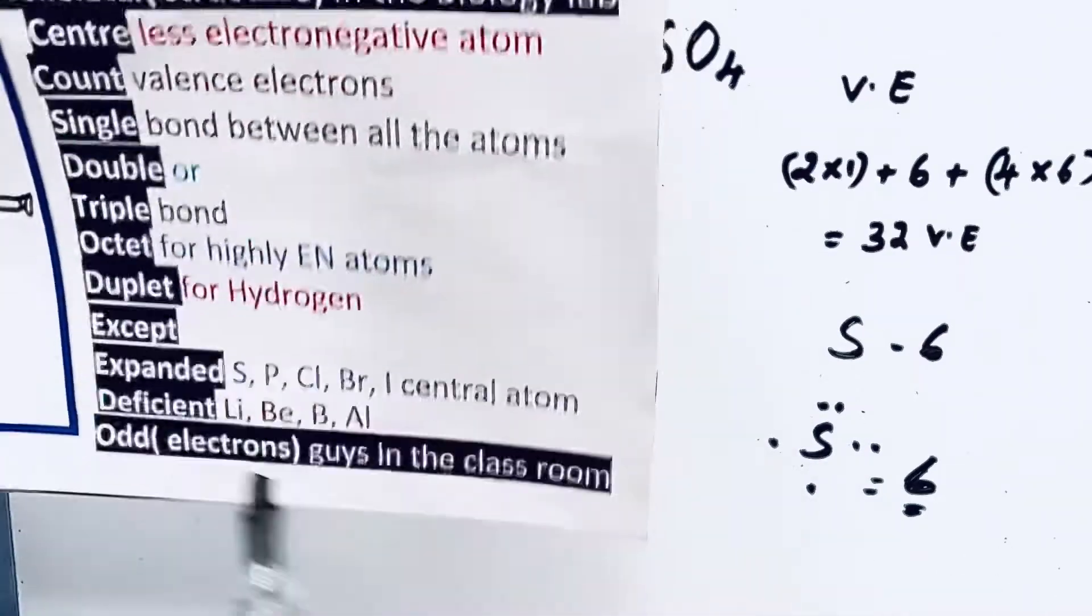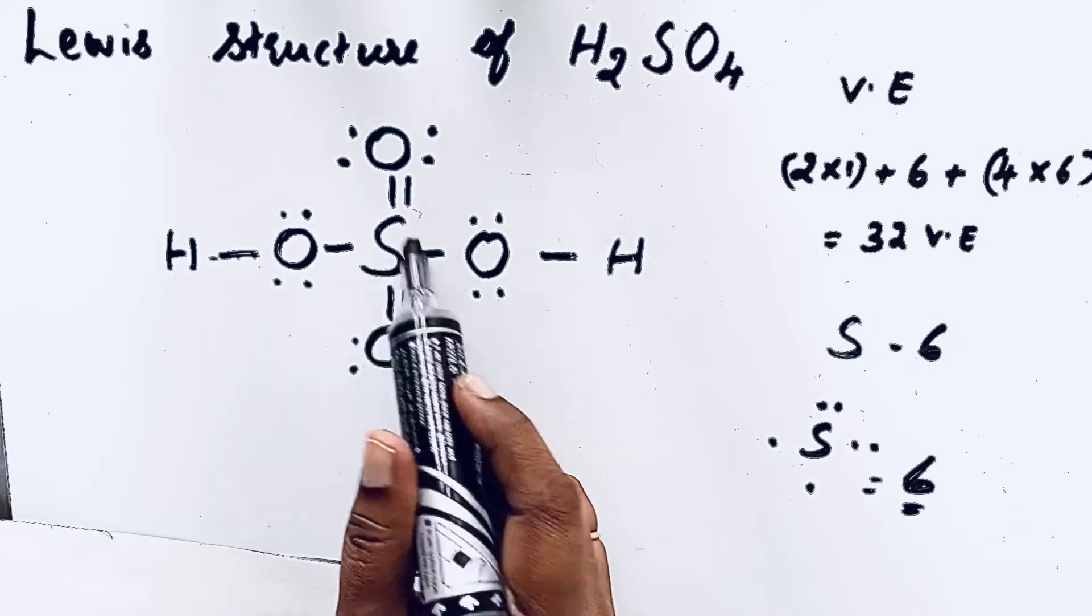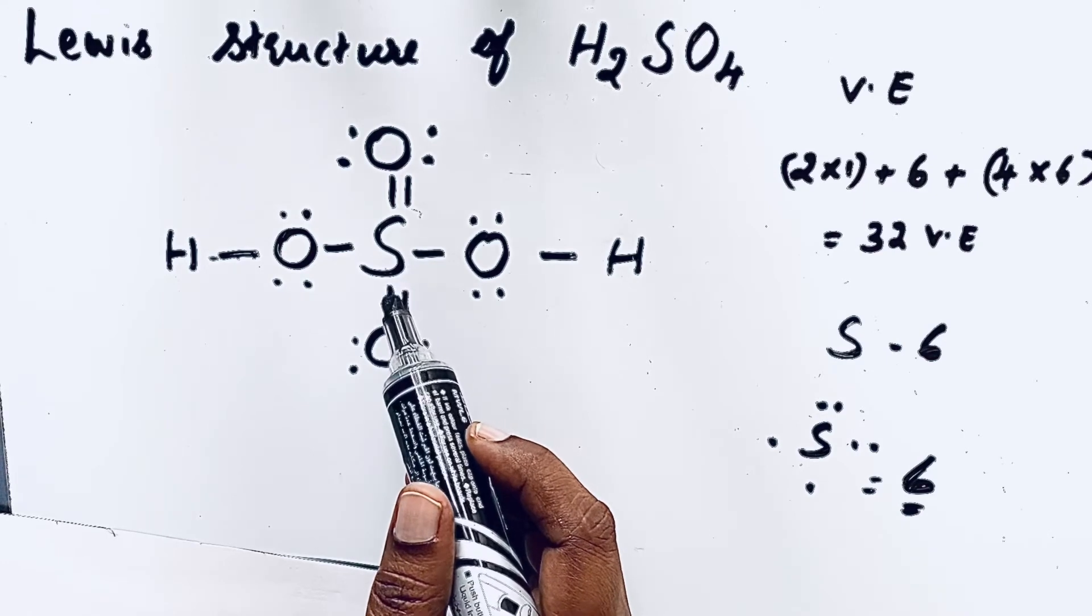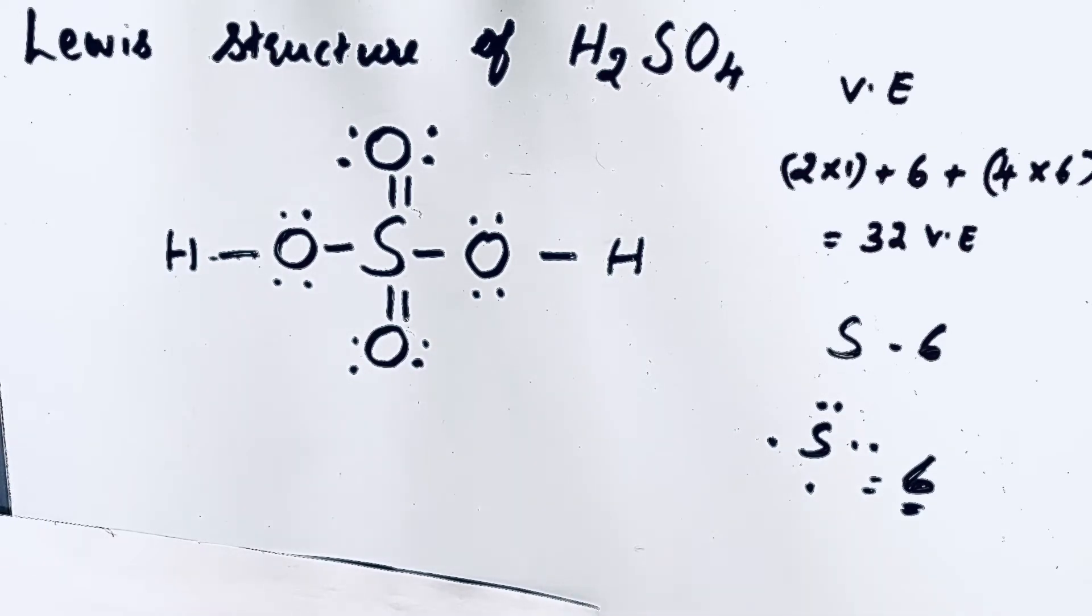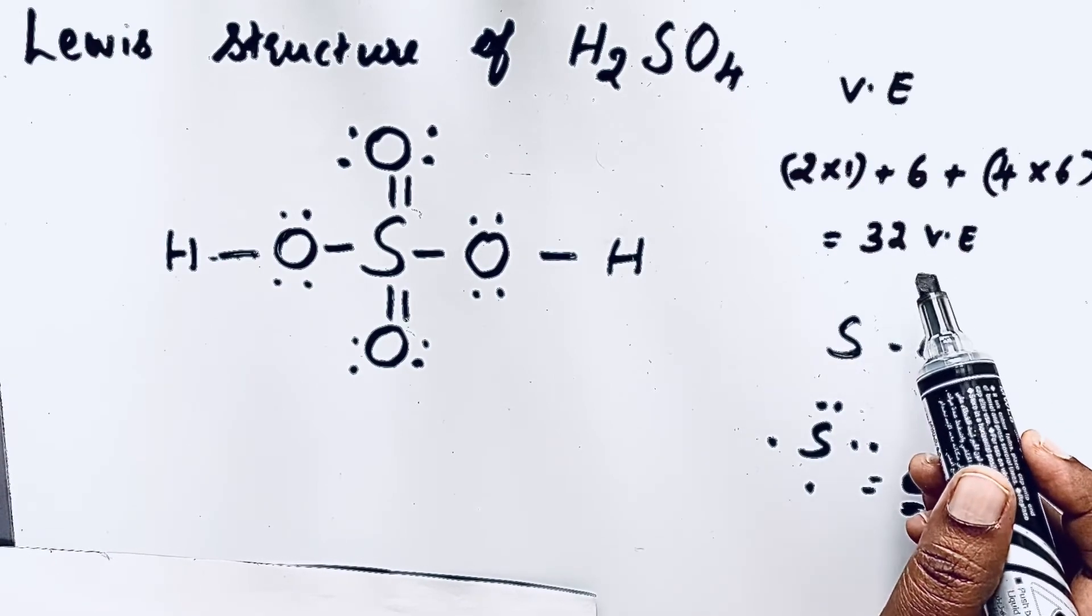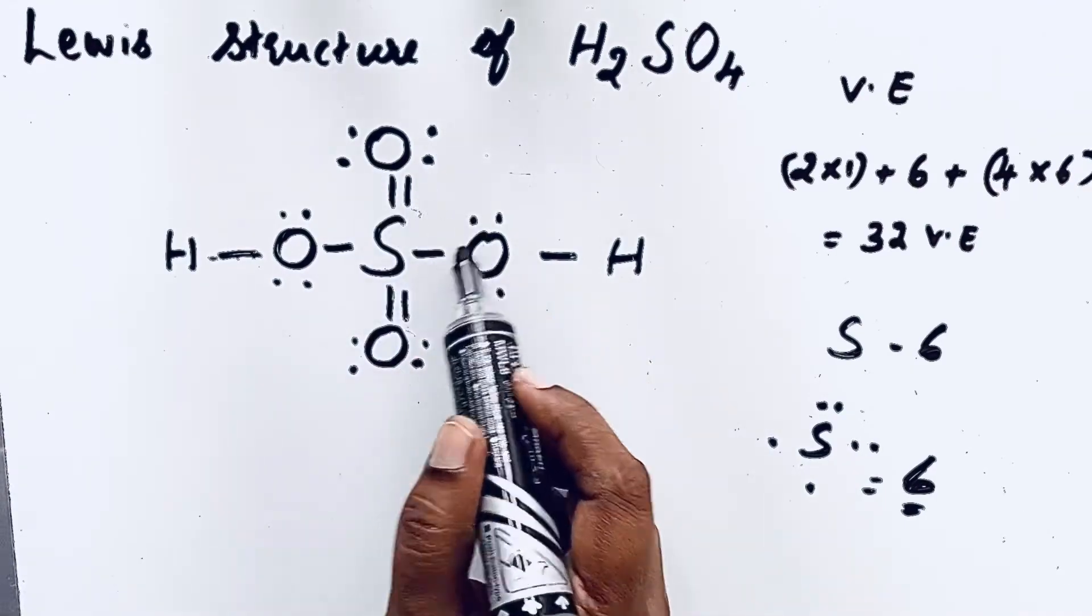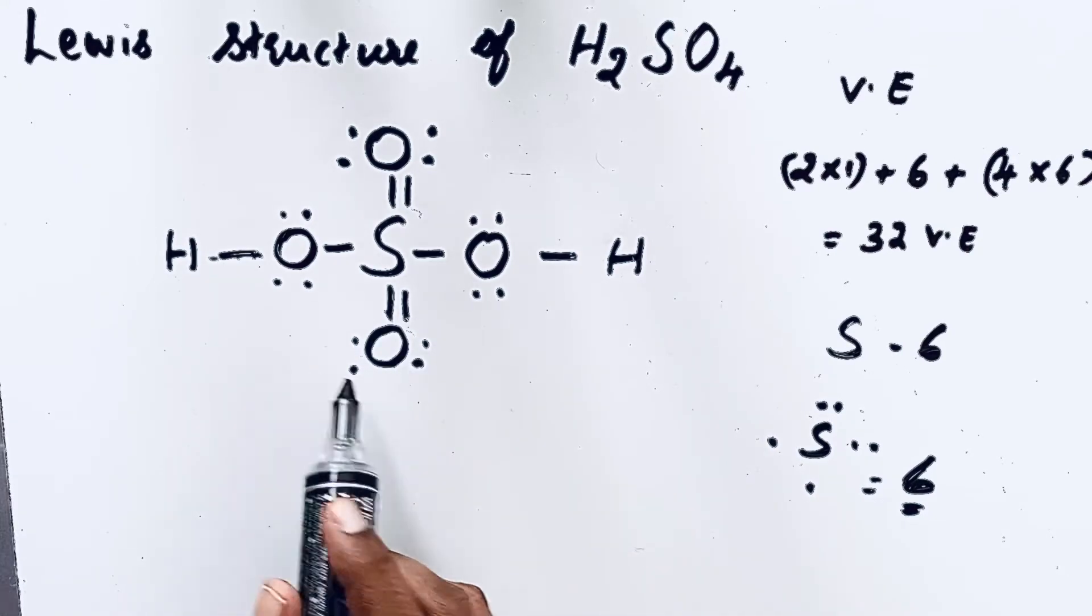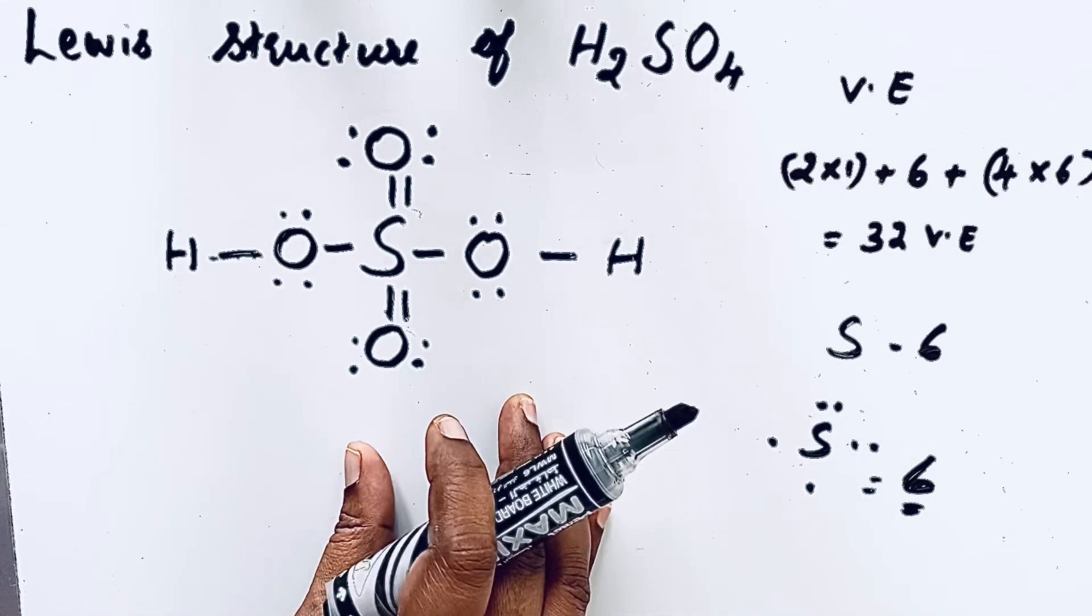So we can have that expanded sulfur. Sulfur if you see: two, four, six, eight, ten, twelve. So twelve electrons are there. But since sulfur is in third period, it can get more than eight. It does not follow that octet configuration. So we can check that with our valence electrons: 32 valence electrons are present or not. Let us see. Two, four, six, eight, ten, twelve, fourteen, sixteen, eighteen, twenty, twenty-two, twenty-four, twenty-six, twenty-eight, thirty, thirty-two. So total 32 valence electrons are present. So the Lewis structure of H2SO4 is absolutely correct.